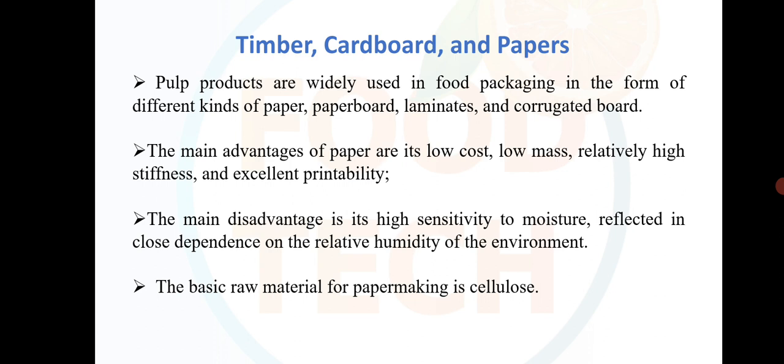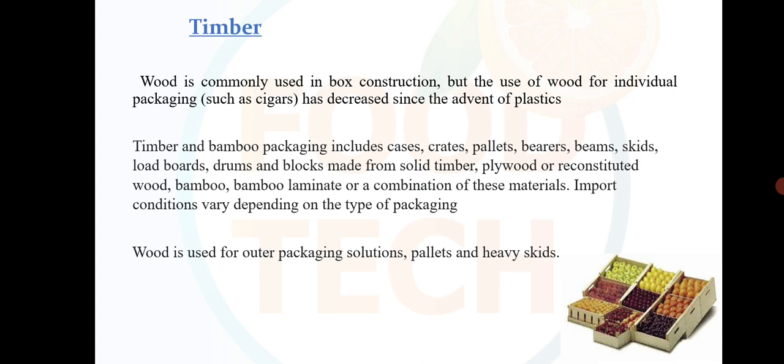Moving on to timber, cardboard and papers: pulp products are widely used in food packaging in the form of different kinds of paper, paperboards, laminates and corrugated boards. The main advantages of paper are its low cost, low mass, relatively high stiffness and excellent printability. The main disadvantage is its high sensitivity to moisture, reflected in close dependence on the relative humidity of the environment. The basic raw material for papermaking is cellulose.